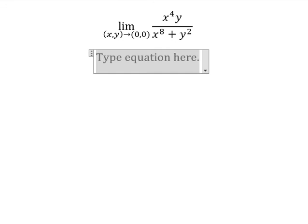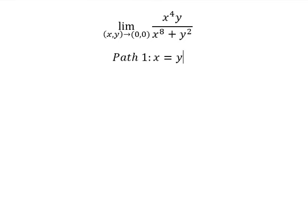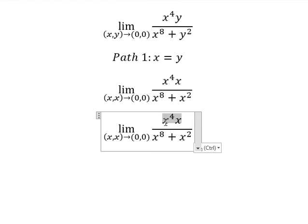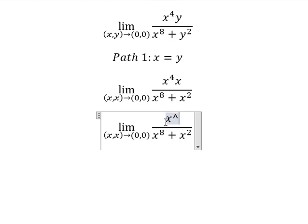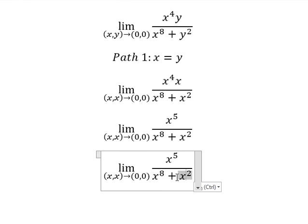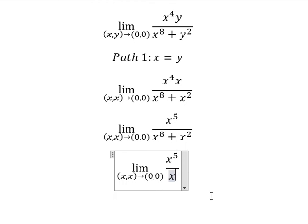We consider part number one that is about x equals y. So we change y into x. So this one we have x to the power of 5. Next, this one we can do factorization by x.